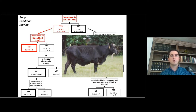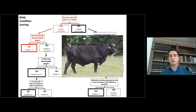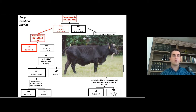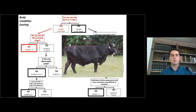And a cow at body condition score 3, you will be able to see the entire rib cage with some difficulty, but you will still see all the ribs. This cow — you don't see the entire rib cage, but you are seeing more than just 3 ribs; you can see the 4th rib and the 5th slightly. So this cow falls somewhere between a 3 and a 4, and the more accurate body condition score will be around 3 and a half.